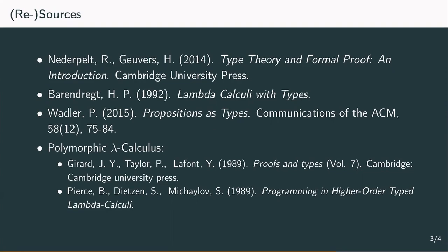In addition to those sources, we also recommend the following two papers, which go more into detail concerning the lower and higher order polymorphic lambda calculi, and are more on the theoretical side. The book Proofs and Types by Jean-Yves Girard, translated and with appendices by Paul Taylor and Yves Lafont, and Programming in Higher Order Typed Lambda Calculi by Benjamin Pierce, Scott Dietzen, and Spiro Mikhailov. All of these references are linked in the literature section.